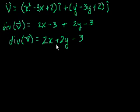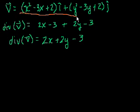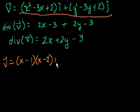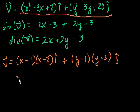Now before I show you the graph, let's analyze this function a little bit. Let's look at the original vector field and think about when it has some interesting points — specifically when either the x or y components are equal to 0. If we factor the x component, we can rewrite our vector field as x minus 1 times x minus 2 in the i direction, plus y minus 1 times y minus 2 in the j direction. So the x component is 0 when x is equal to 1 or 2.